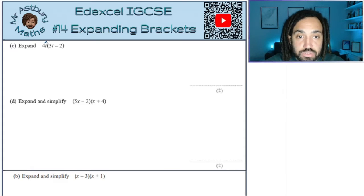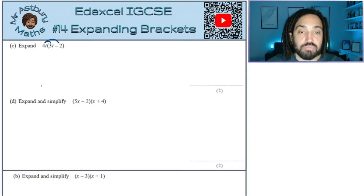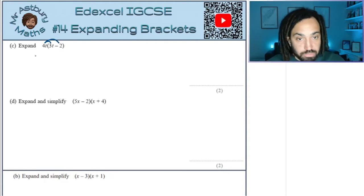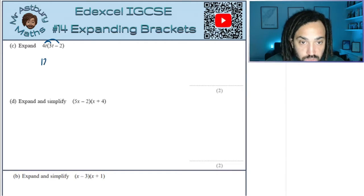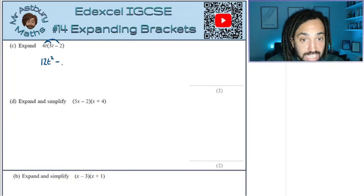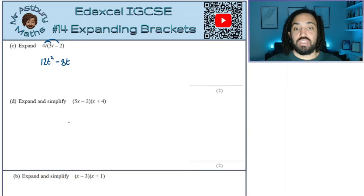I always like to draw these little arcs on my brackets, so I know that I'm multiplying everything inside the bracket by everything outside the bracket. So the first one is going to give me 12, because 4 times 3 is 12, and t times t is t squared. And the next line is going to give me minus 8, because 4 times minus 2 is minus 8, and there's just a t there. Job done.